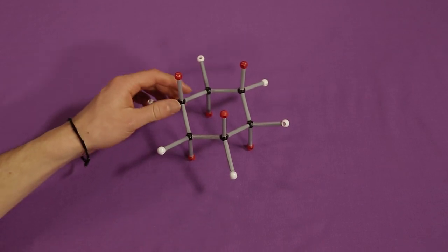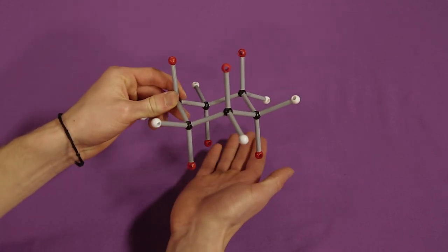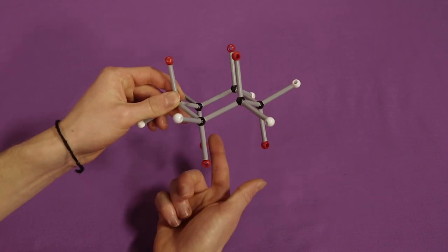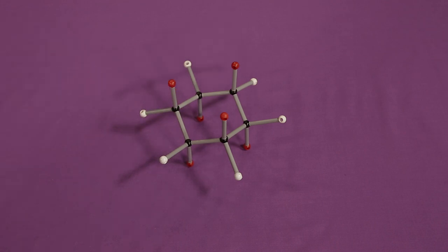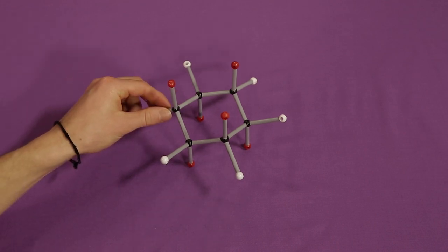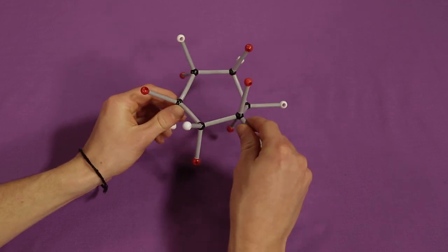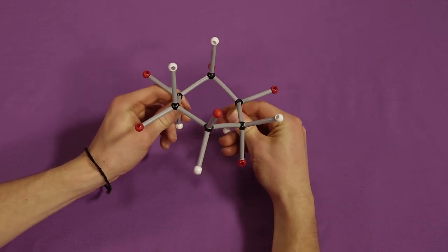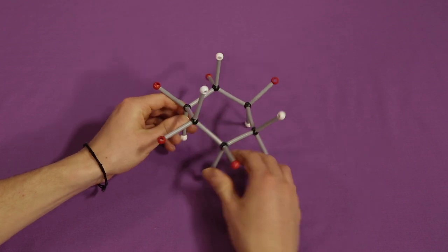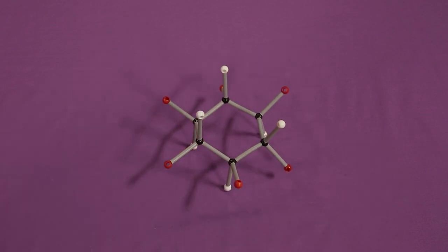First way: set your model on the table so the equatorial axis is parallel to the table. The model should be sitting on three legs. To perform the flip, take the positions in between the current legs and push down on the equatorial positions.